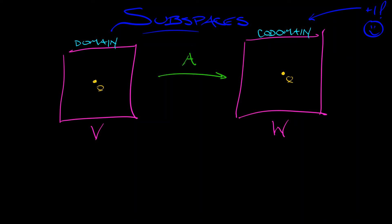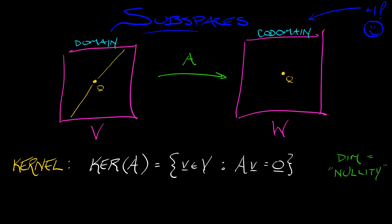One is called the kernel of A. The kernel of A is the set of all vectors in the domain that are sent to zero. So it's everything that A kills or squashes to zero. That kernel is going to be a subspace of the domain. It's a subspace of V. It's got a dimension. And that dimension is called the nullity of A. Man, that's a cool word. Nullity. We've got nullity. We've got codomain. We've got all kinds of good stuff going on here.